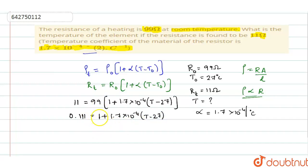This 1 we shall take to the other side. So, 0.111 minus 1, you will get minus 0.888, which is equal to 1.7 into 10 power minus 4 into T minus 27.